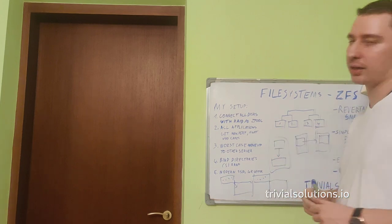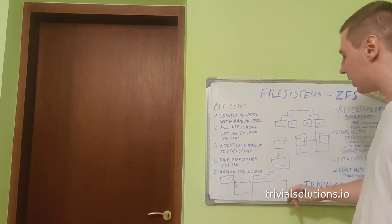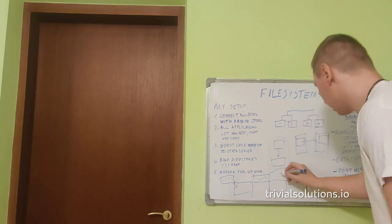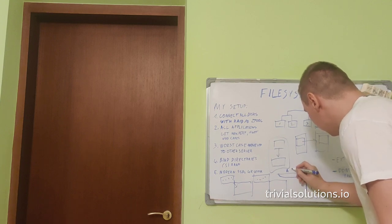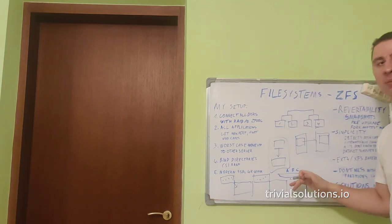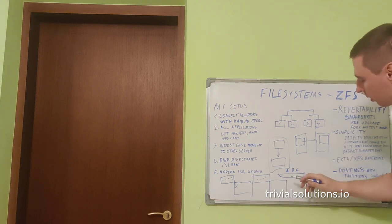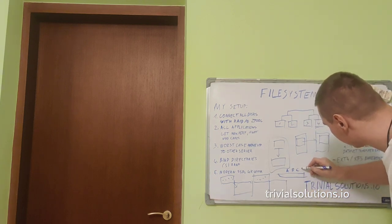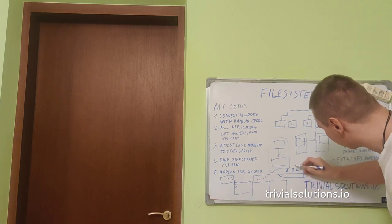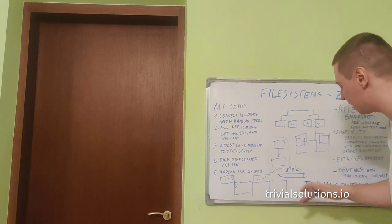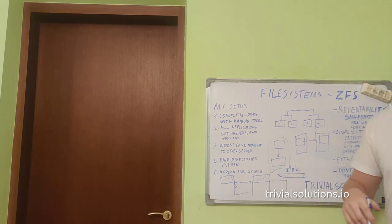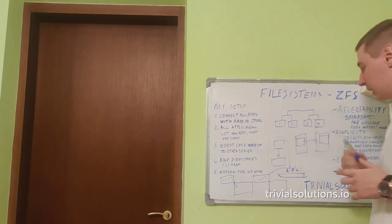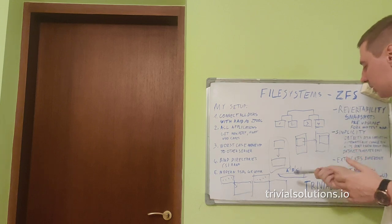An application will never see that it wrote something to the disk in a timeline. Application wrote A, B, and C. Your application can only ever see a state like it wrote everything, it wrote everything but C, or it wrote only A. It will never have a state like it wrote A and it wrote C but it never wrote B. So on good applications, it works consistently like databases.